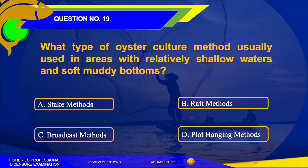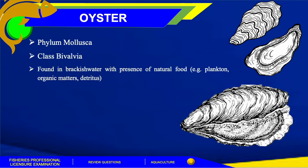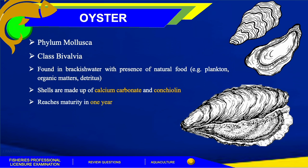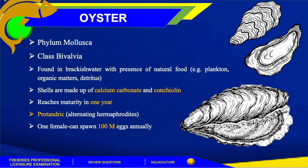The answer for this question is letter A, stick method. When we talk about oysters, they are mollusk species under class Bivalvia, usually found in brackish water with presence of natural food such as plankton, organic matter, and detritus. The shells of oysters are made up of calcium carbonate. They reach maturity in one year and are protandric species, wherein the first year they are sperm-releasing males and as they grow older, they become egg-releasing females.